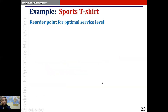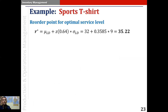Using the mean and standard deviation of lead time demand, we determine the reorder point for the optimal service level. R-star equals mu-LD plus Z of 0.64 multiplied by sigma-LD, which by substituting the appropriate values gives R-star equal to 35.22.